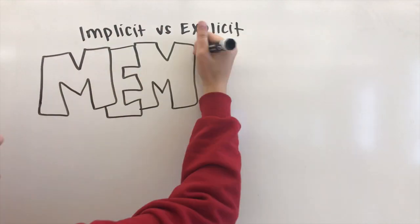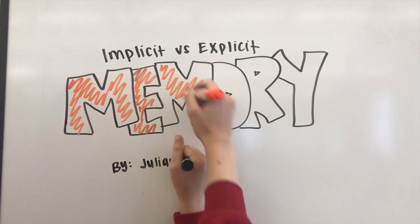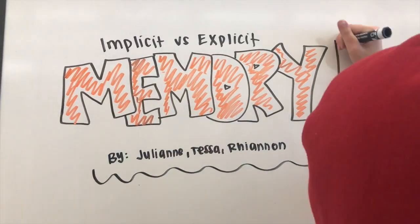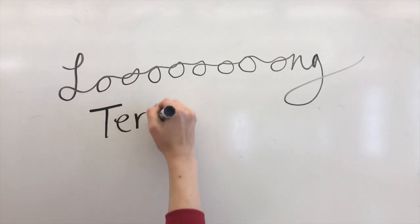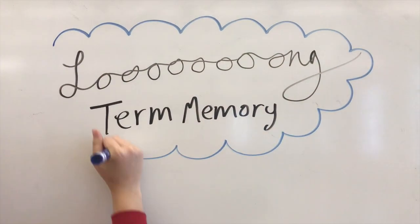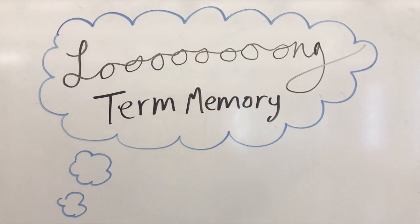Today we are going to learn about the difference between implicit versus explicit memory. When we learn about memory, one of the most important types of memory is our long-term memory. Humans have two main types of long-term memory: implicit memory and explicit memory.